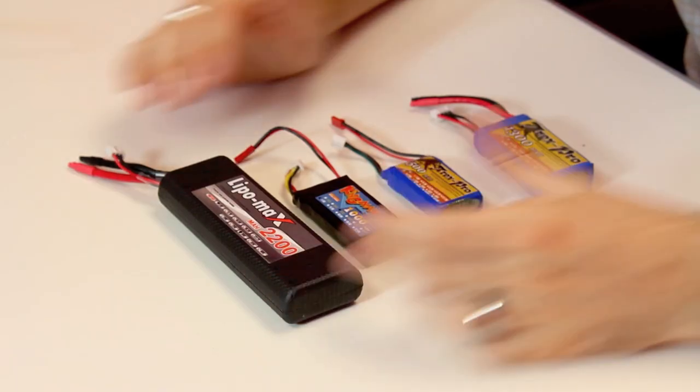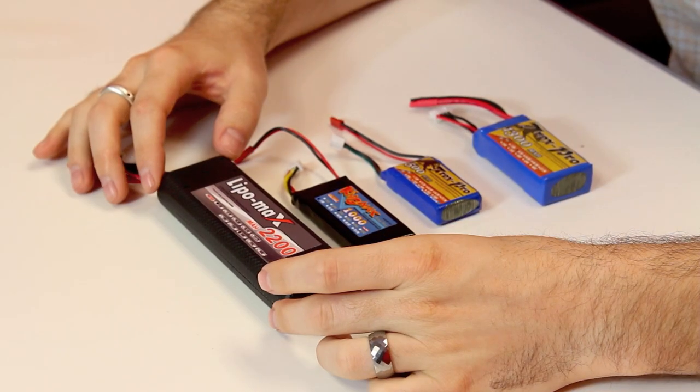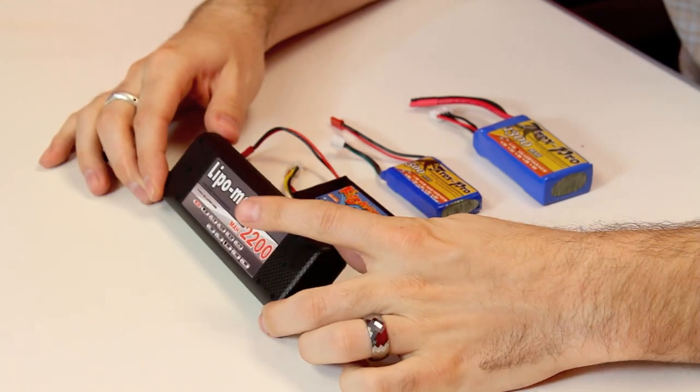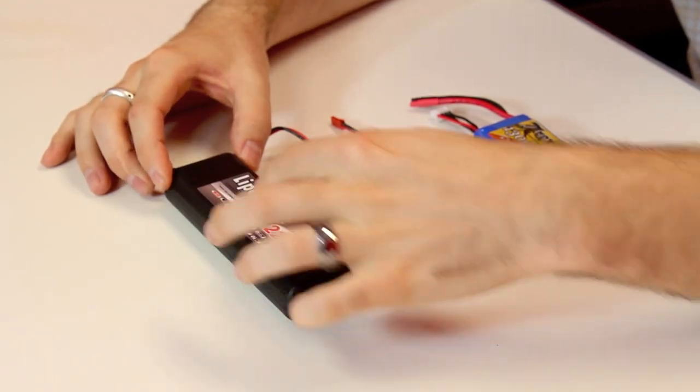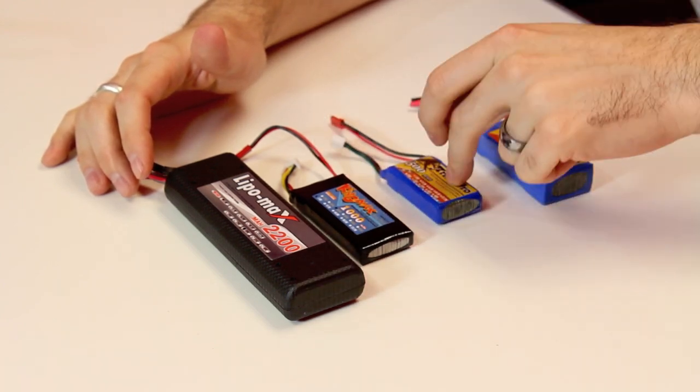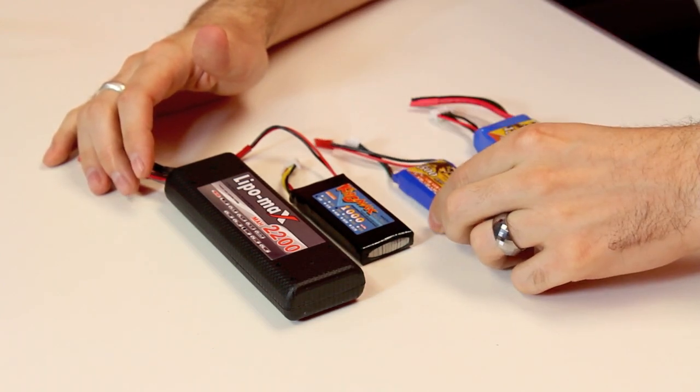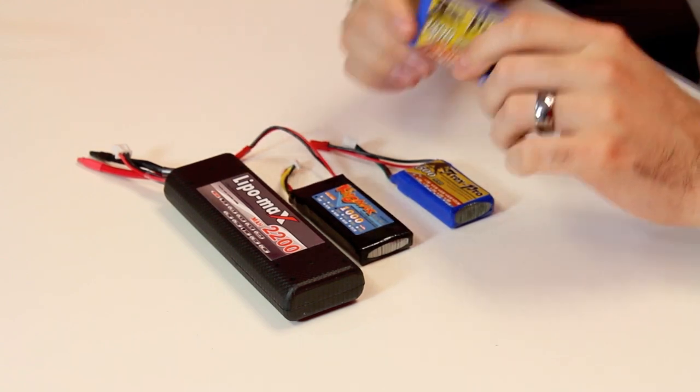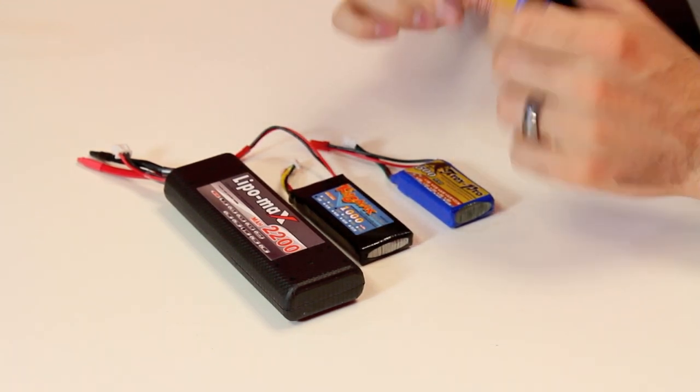We've got four different types of batteries. They're all lithium ions, and we've got a 2200 milliamp hour that's 7.4 volts. We've got 1000 in 7, and a 500 milliamp hour in the 7.4 volts. And we've also got this 1300 milliamp hour in 11.1 volts.